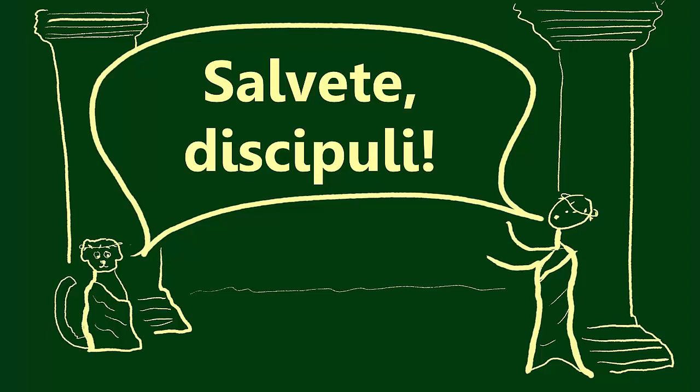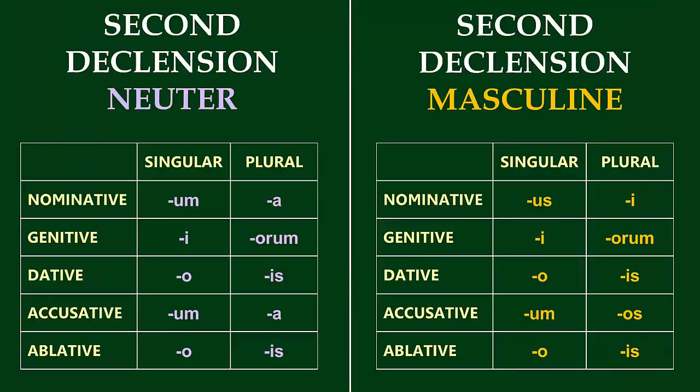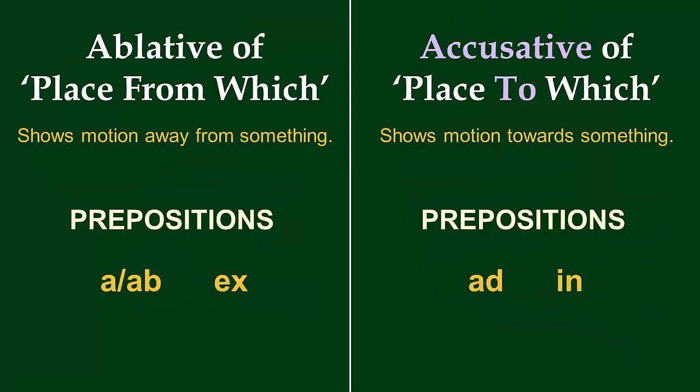Salvete Discipuli! Welcome back to Agora Academy. Recently, we've been doing a lot of talking about nouns. We learned all about the second declension, and we even snuck in a couple of lessons about the ablative of place from which and the accusative of place to which. Today, we're going to switch our focus to verbs.